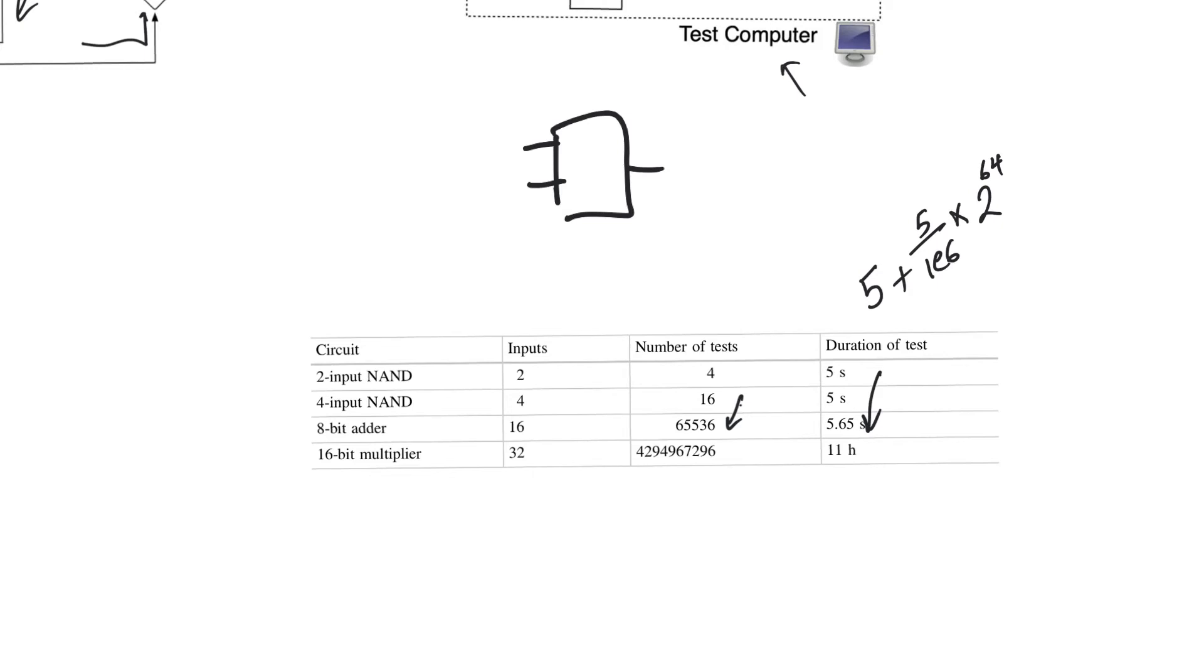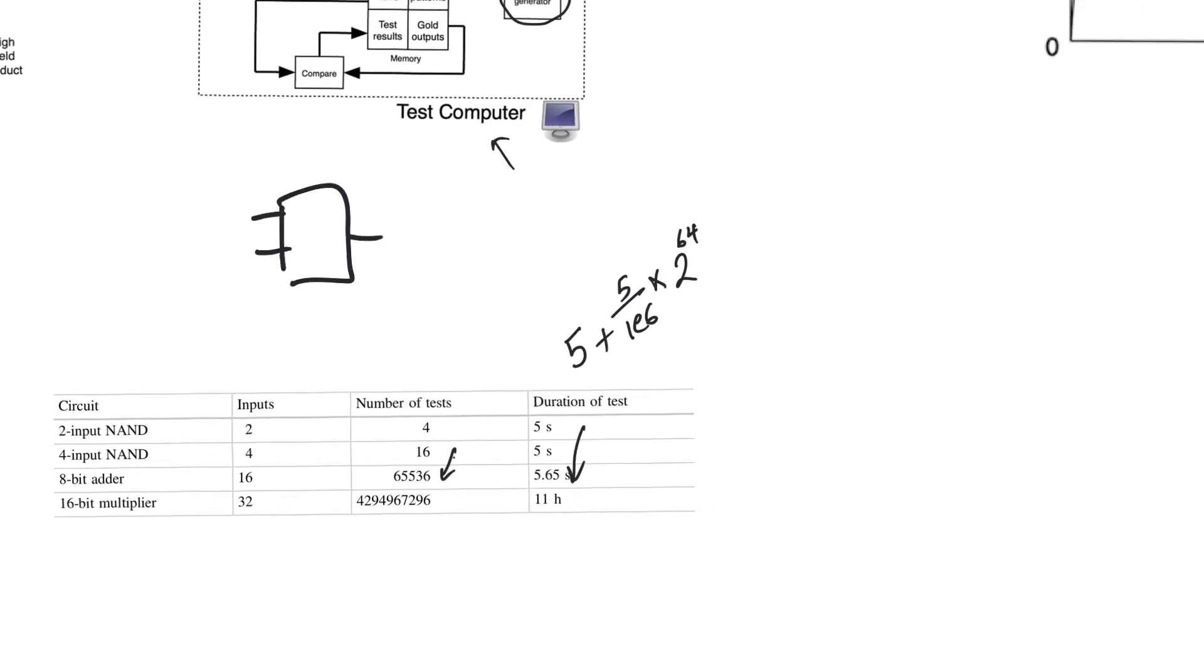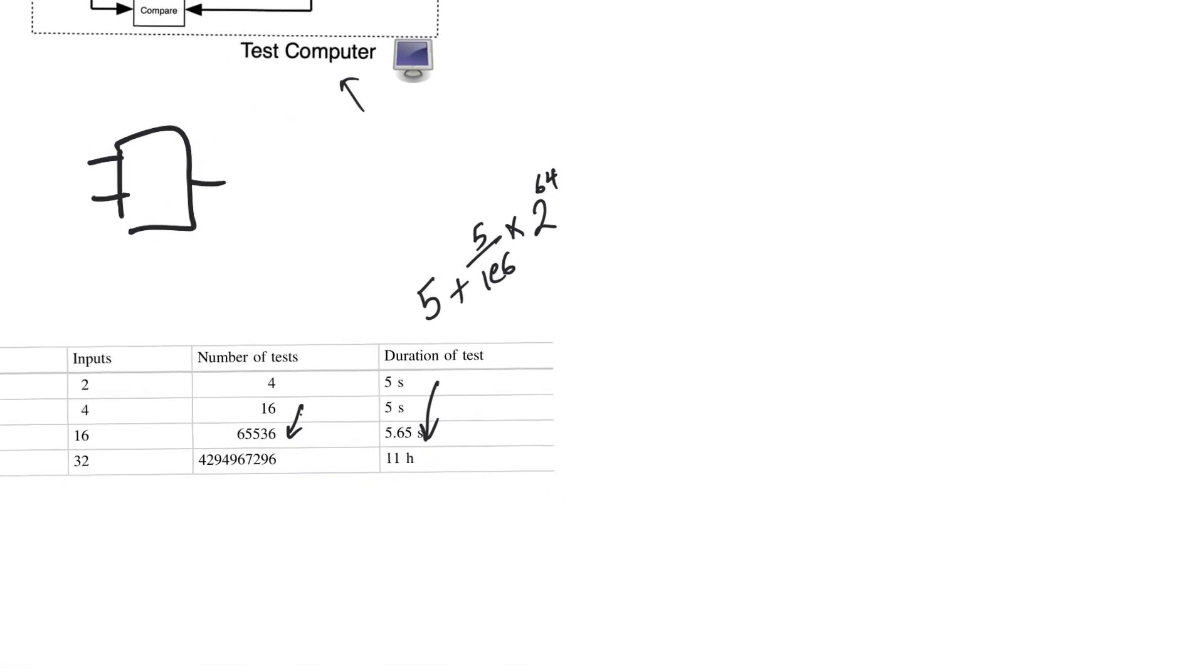11 hours is a very large number, but it is still a number that we can have a discussion about. Maybe we can tolerate 11 hours. The problem is most circuits are not even combinational circuits. They are pipelines containing both combinational elements and sequential elements. In that case, calculating the total number of tests becomes a little bit more challenging.